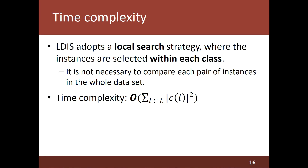Notice that LDIS adopts a local search strategy where the instances are selected within each class, and due to this, it is not necessary to compare each pair of instances in the whole dataset. The time complexity of LDIS is proportional to the sum of the squares of the cardinalities of the classes of the dataset. When there are more than one class, this is better than the square of the cardinality of the whole dataset.